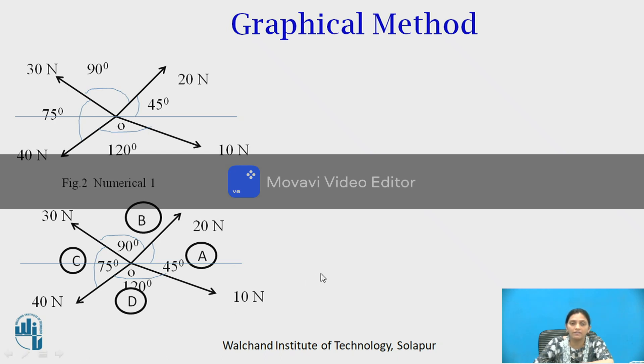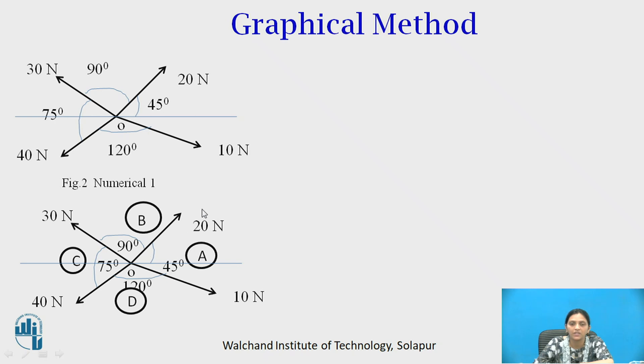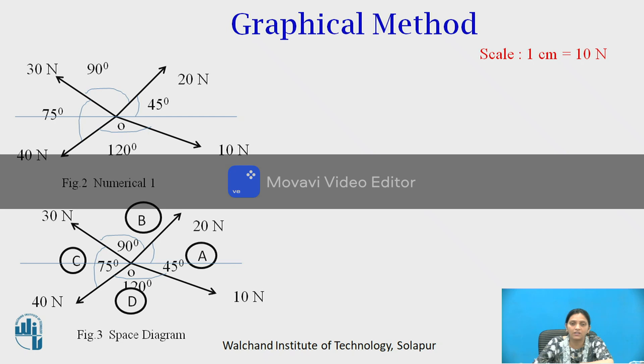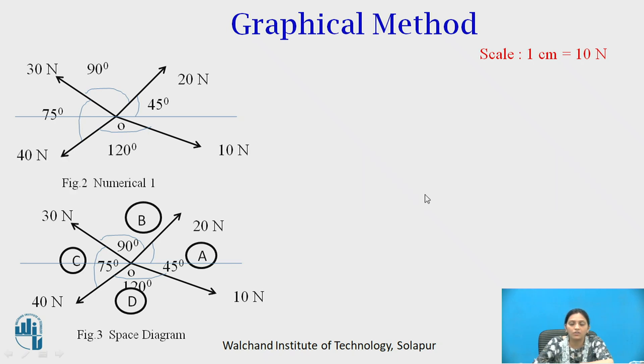After that, we will draw a vector diagram. So we know that from space A to B, there is one force 20 Newton and it is making angle 45 degrees with horizontal. So same force we draw here. For that, we need to take one scale. Say 10 Newton force is indicated by a 1 centimeter line. So for 20 Newton, draw a 2 centimeter line. Start from A. A to B, the force is running 20 Newton, so draw this line 2 centimeters.